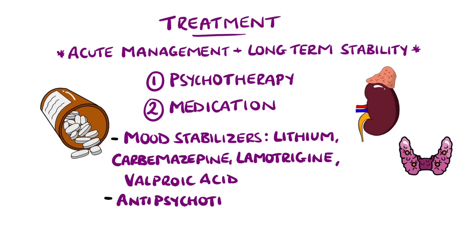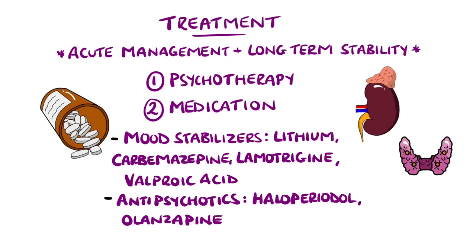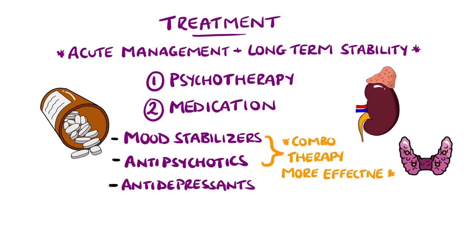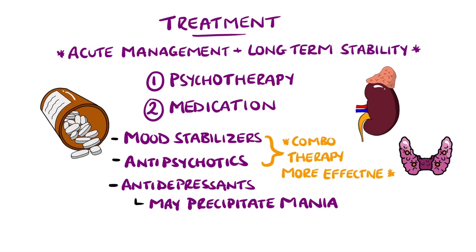Antipsychotics such as haloperidol and olanzapine are used more commonly in manic episodes, and a combination of mood stabilizers and antipsychotics has been found to be more effective than either class alone. Antidepressants are another class, but they are not typically used alone as they can trigger manic episodes or accelerate cycles; however, they may be used alongside mood stabilizers in some cases.